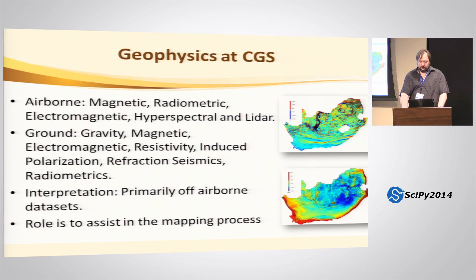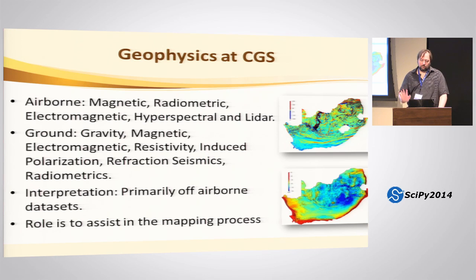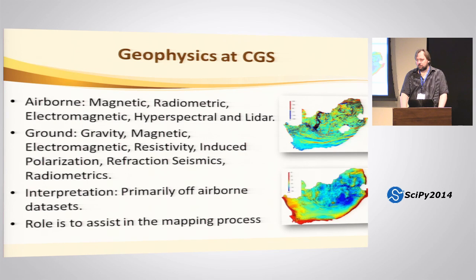Geophysics at the Council for Geoscience covers most of the bases you'd expect in any geophysical unit. We do pretty much every type of geophysics, ironically except seismics. We concentrate on magnetic data, gravity data, and radiometric data — which is a kind of natural background radiation. We're also starting to get into hyperspectral data and LiDAR, so the concept of truly enormous data sets and how to deal with them efficiently is very interesting to us.